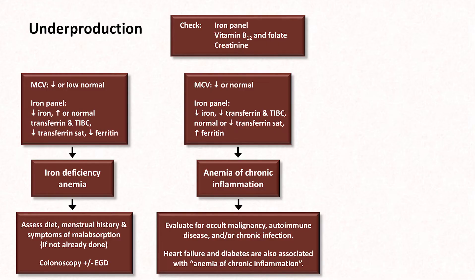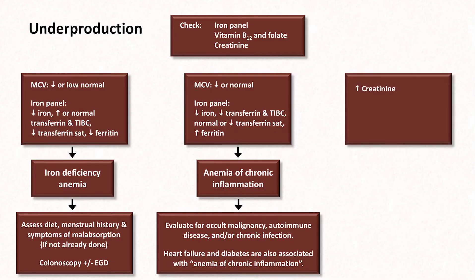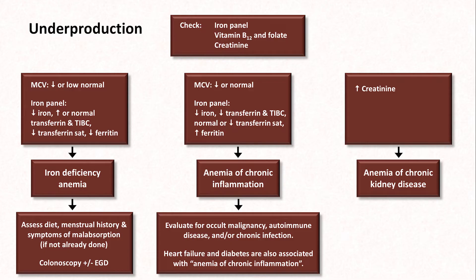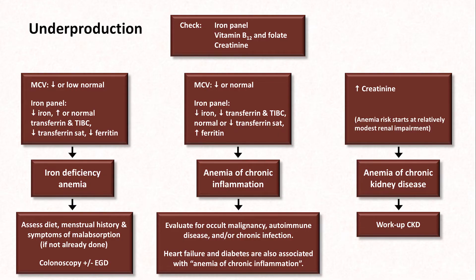If the patient instead has a high creatinine, they may have anemia of chronic kidney disease, which warrants a whole separate workup that's beyond the scope of this video series. I tried to track down data on at what level of renal impairment anemia might start to develop. I could not find an overwhelmingly convincing paper that cited a specific GFR, but the general consensus appears that the risk starts at a relatively modest severity and increases as GFR drops.